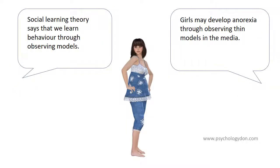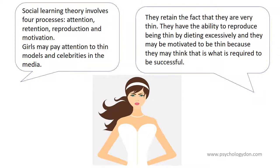Social learning theory says that we learn behaviour through observing models. Girls may develop anorexia through observing thin models in the media. Social learning theory involves four processes: attention, retention, reproduction, and motivation.